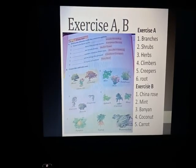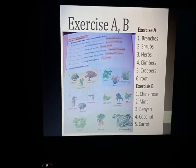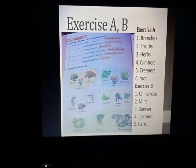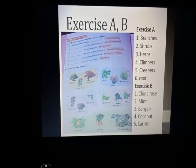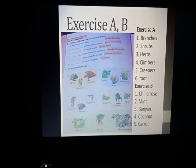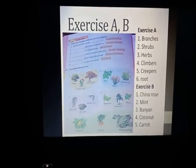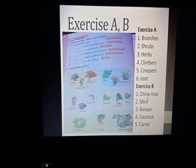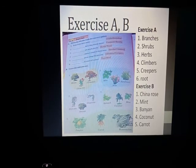Climbers cannot stand on their own. Creepers grow along the ground. Seeds and roots are parts of a plant. In Exercise B, you have to cross out the odd one. In the first group — mango, gulmohar, and china rose — china rose is a shrub while the other two are trees, so cross it out.